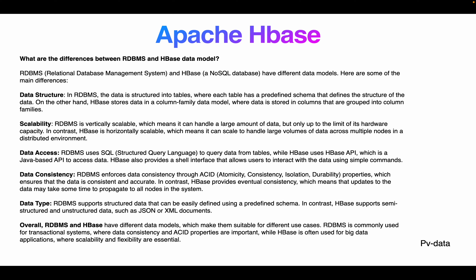RDBMS is a relational database management system and HBase is a NoSQL database, so they have different data models. The first difference is data structure: RDBMS stores data in tables where each table has a predefined schema defining the structure of the data. HBase, on the other hand, stores data in a column family data model where data is stored in columns grouped into column families. Each column family stores data as key-value pairs.